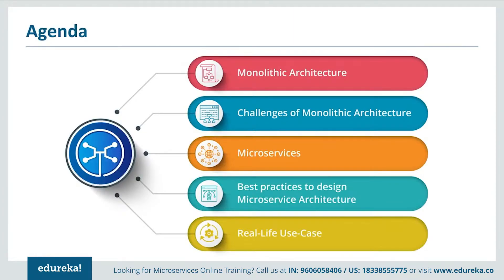Initially, we will start talking about the previous system — the monolithic architecture — followed by its challenges. Then, we will jump on to the functionalities of microservices and the best practices to design them. After going through all the concepts, we will go through a real life use case of Uber and understand them better.